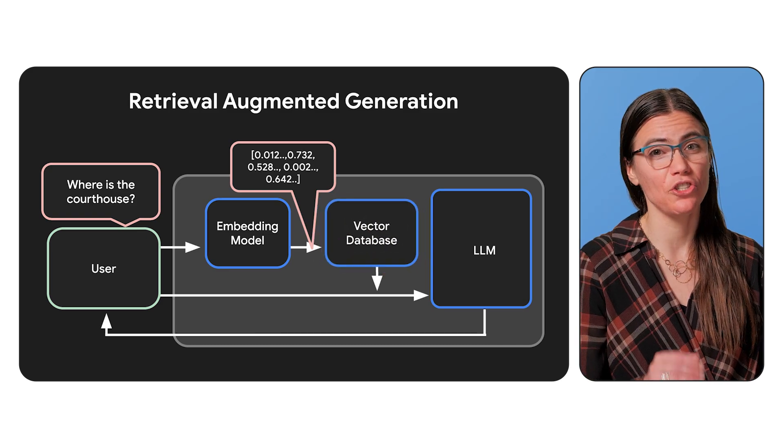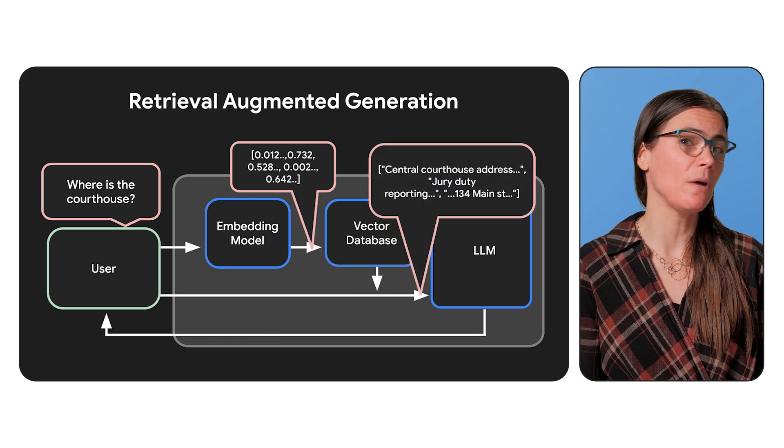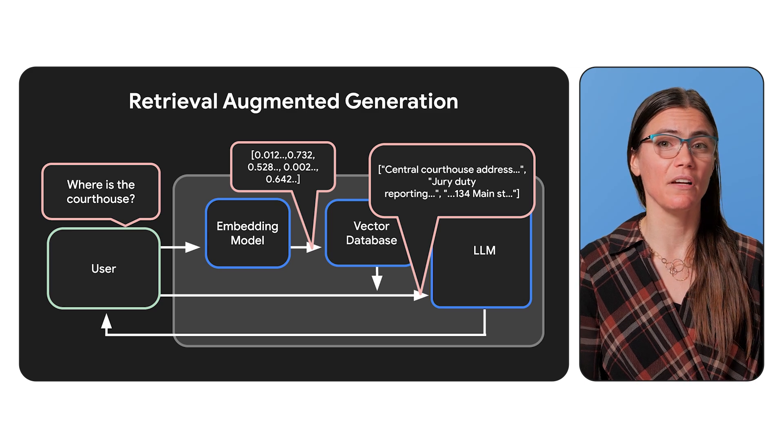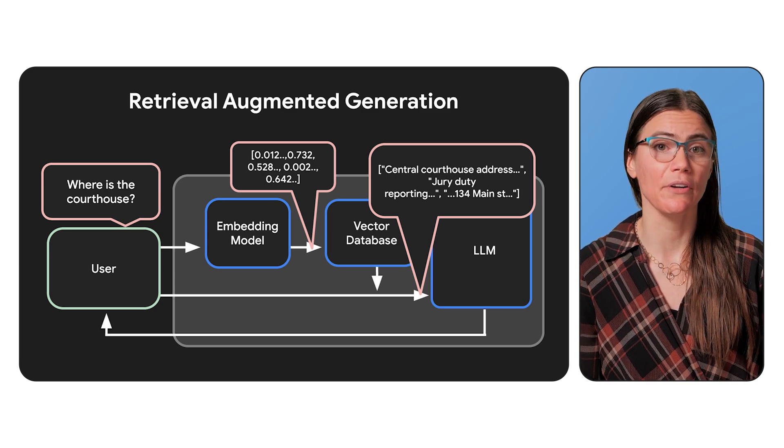Then we're going to use that embedding we just generated to find some number of related pieces of data in our data store using a similarity algorithm. And I think we talked about this in our embedding videos, but just to recap, we use the embeddings model to make sure that all the similar data ends up with similar vectors. And that makes it easy for a vector database to find all the related info.